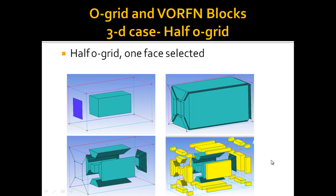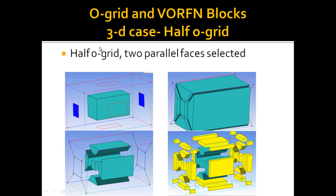The half O-Grid has different cases. The first case is when one face is selected — the O-Grid passes from this face through to the Warframe block, as shown in the figures with Warframe blocks in yellow. The second case is when two parallel faces are selected — the O-Grid passes from both sides, and you can again see that in the Warframe blocks the O-Grid is passed from both sides.